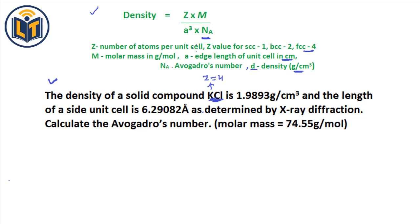The density is given as 1.9893 grams per centimeter cubed, so the d value is known. The problem also states that the edge length of the unit cell is 6.29082 angstroms, as determined by X-ray diffraction. This is our a value.